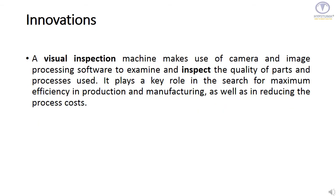Innovations: a visual inspection machine makes use of cameras and image processing software to examine and inspect the quality of parts and processes used. It plays a key role in the search for maximum efficiency in production and manufacturing, as well as in reducing process costs.